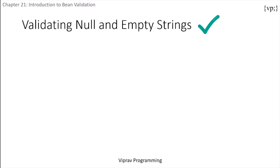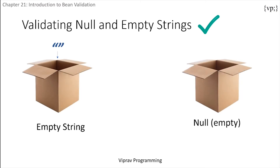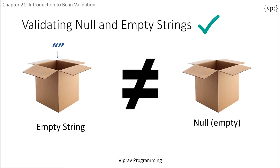To validate null and empty strings, we have to make clear the difference between an empty string and a null value. An empty string is a string value with no characters. A null value is the absence of value — there is no value. This differentiation is useful when debugging code.